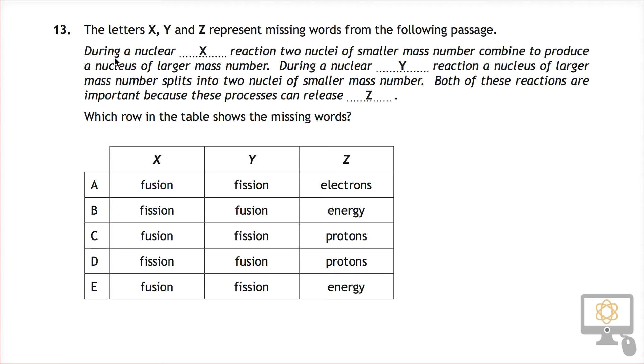So let's have a look at the paragraph. During a nuclear something reaction, two nuclei of smaller mass combine together to produce a nucleus of larger mass number. Well, that's a fusion reaction when we take two nuclei and we combine them together. F-U-S-I-O-N fusion.